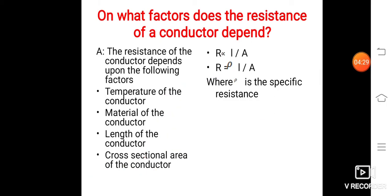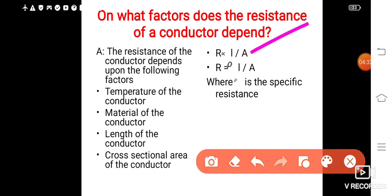From this, we can say that R is directly proportional to L divided by A. Then to remove the proportionality sign, we have to add Rho. So R is equal to Rho L divided by A, where Rho is the specific resistance. So this is how we express the resistance of the conductor.